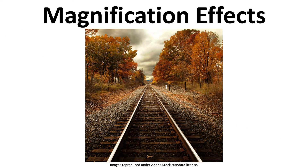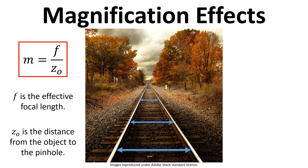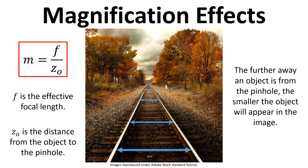Next we're going to look at magnification effects. If we look at a railway track as it goes into the distance, the rails become closer and closer together, even though in reality they stay the same distance apart. That's because the magnification decreases as the object gets further away from the pinhole. The effective focal length stays the same, but as we go further into the distance z_o increases, so the further away the object is from the pinhole, the smaller it will appear in the image.